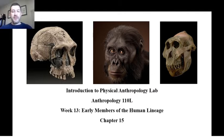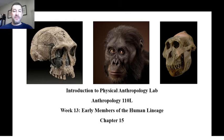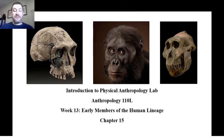Welcome back everybody to week 13. This week we're covering early members of the human lineage, chapter 15 in your textbook. What we're looking at this week is the first species that branch off in the greater primate family tree into the branch that we are the modern tip of — our ancestors, the first species evolving into something like a human being. We'll cover the first phase this week, and next week we'll look at the later members of the human lineage.